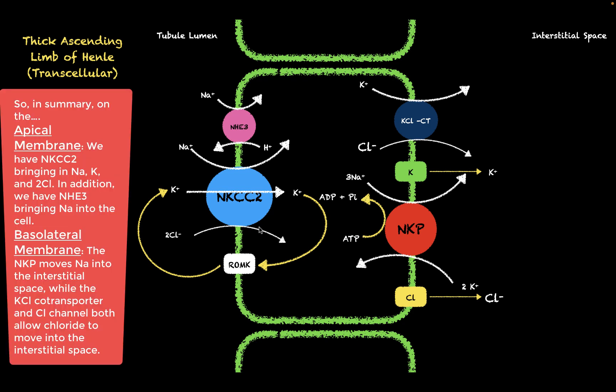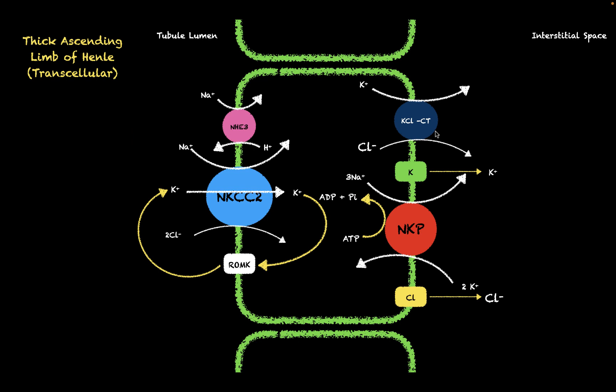To summarize the transcellular mechanisms: on the apical membrane, NKCC2 brings in sodium, potassium, and chloride, while NHE3 brings in sodium. On the basolateral membrane, the sodium-potassium pump moves sodium out to the interstitial space, and the potassium-chloride co-transporter along with chloride channels allow chloride to exit into the interstitial space. That is how sodium chloride is reabsorbed transcellularly in the thick ascending limb.